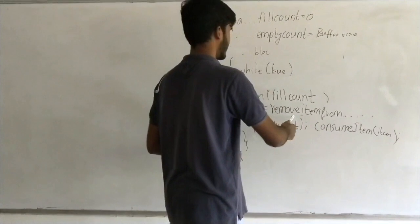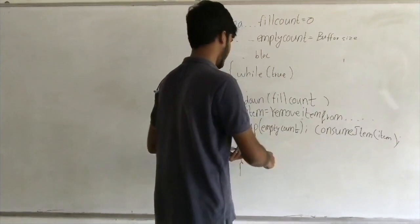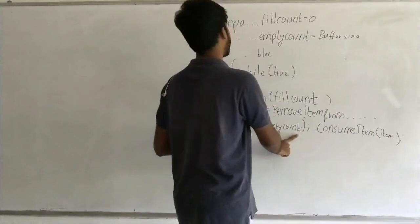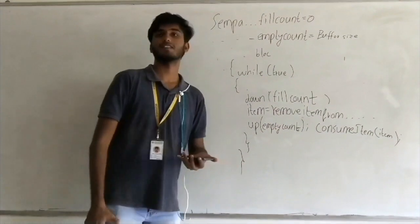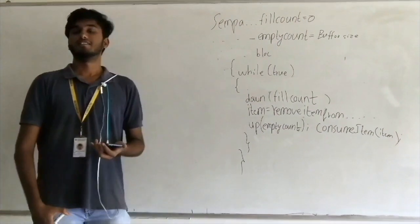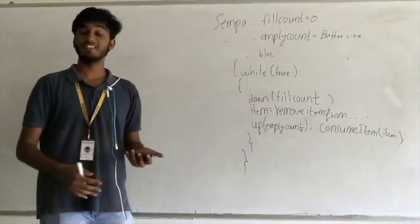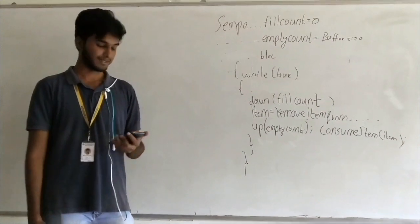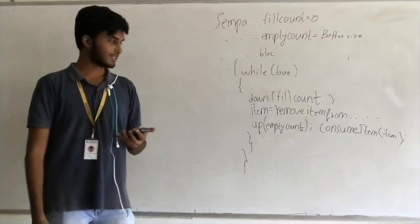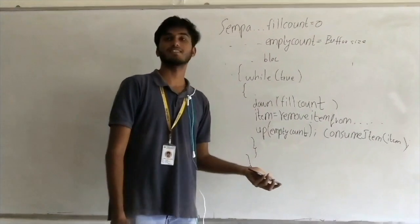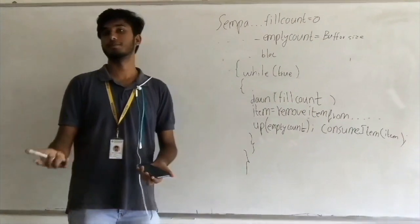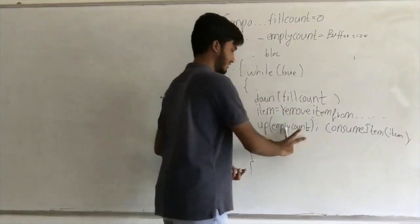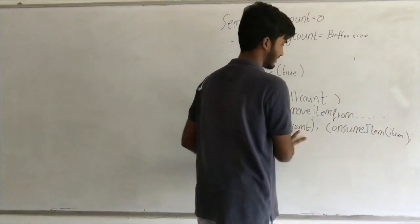Item equals remove item from buffer — the consumer removes an item. Then up the empty count: the empty count is the number of free spaces in the buffer. When the consumer consumes something, that increases the number of empty spaces by one.